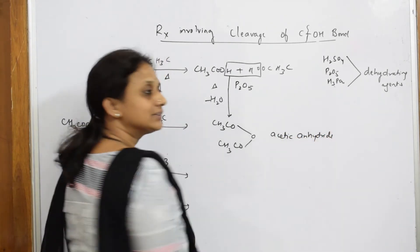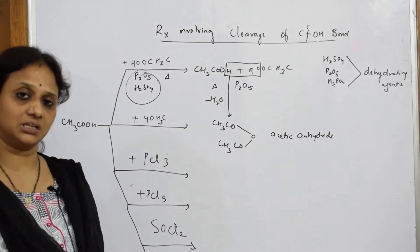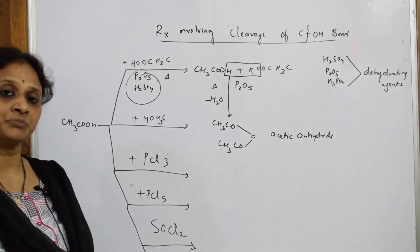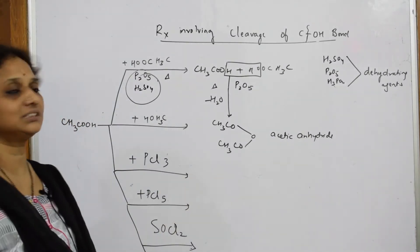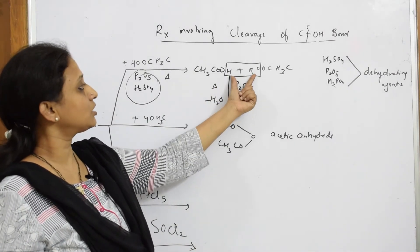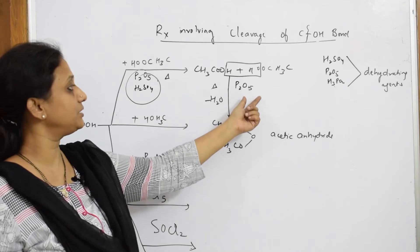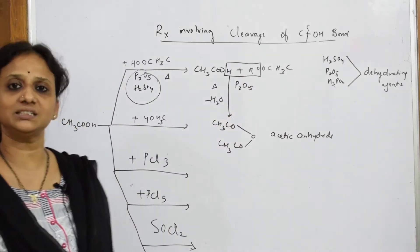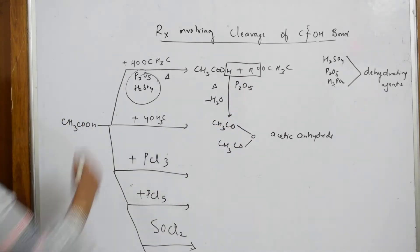This is called acetic anhydride. Acetic anhydride means a condensed molecule of acetic acid with removal of water. Simple: two molecules of acid, eliminate water because you have this dehydrating agent. After eliminating water, write the product formed - acetic anhydride. We have done with the first reaction.